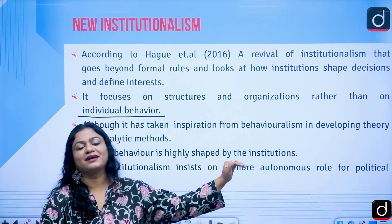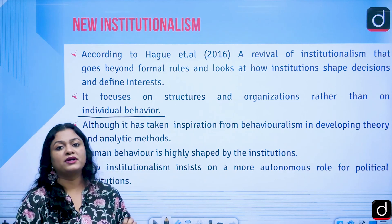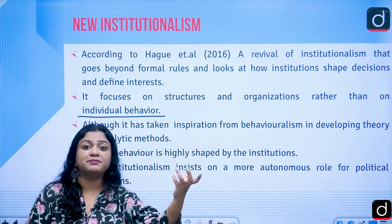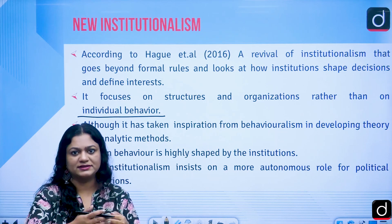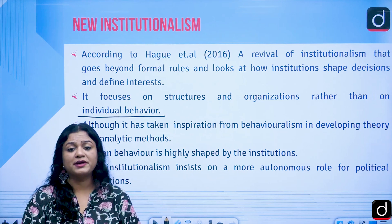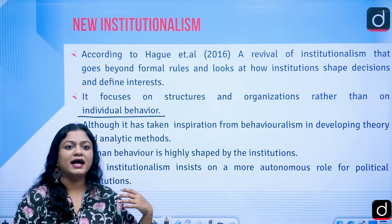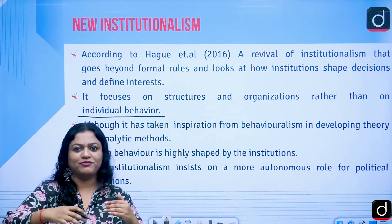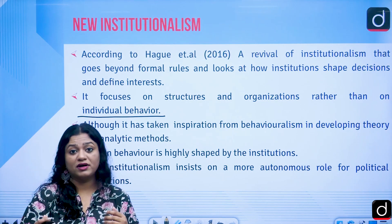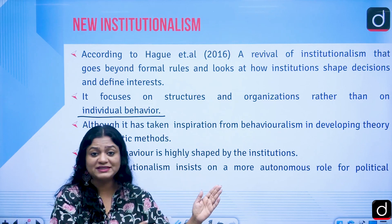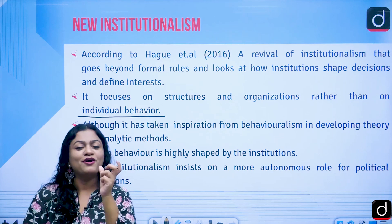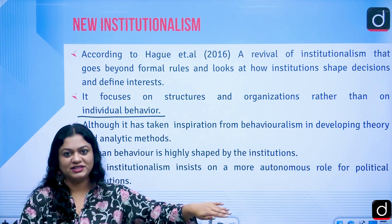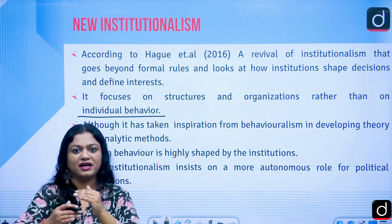Human behavior is highly shaped by institutions — this was one of the most important ideas behind neo-institutionalism. Whatever institutions you have, they shape human behavior through the distribution and allocation of resources. In the 1980s-90s, thinkers came up with ideas of weak state, strong state, and fragile state, because the state is the institution responsible for providing and channeling all your basic needs.